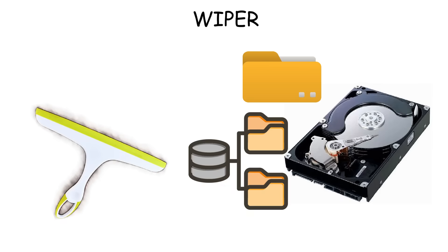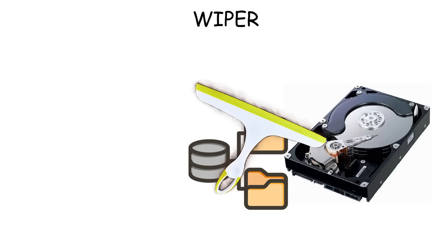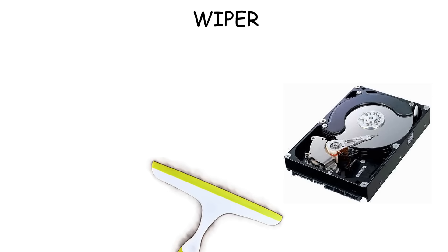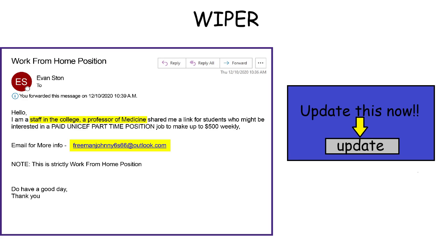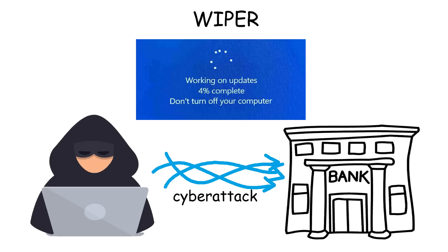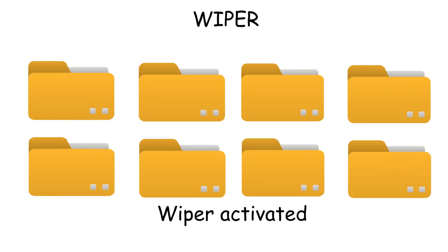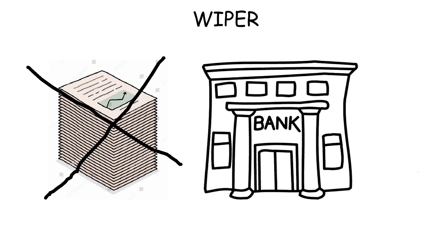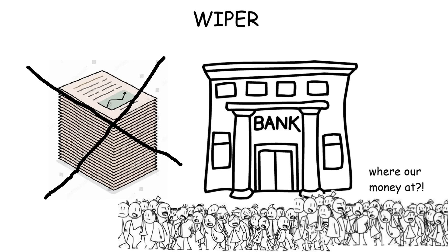A wiper is a type of malware designed to permanently wipe data on hard drives or disable entire systems. It typically spreads through phishing emails or malicious software updates. In a cyber warfare attack on a bank, a hacker group might deploy a wiper disguised as a routine update. Once triggered, it erases transaction records, customer data, and corrupts backup servers, causing irreversible damage and loss of customer trust.